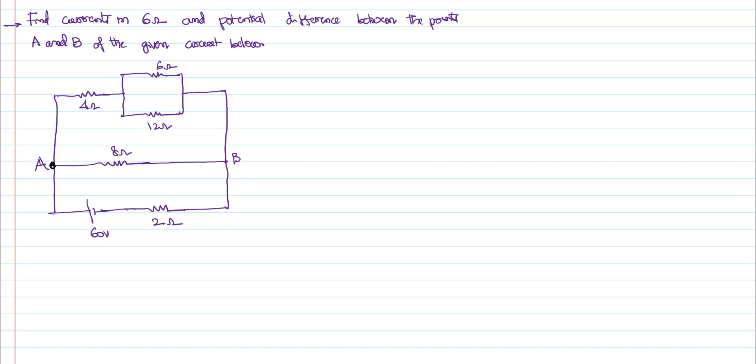We want to find out the potential difference between the points A and B. Between these two points we need to find the potential difference. If you look at the circuit, there is a power supply of 60 volts and there are resistors. How does the current get distributed? If you understand that, try to understand that.